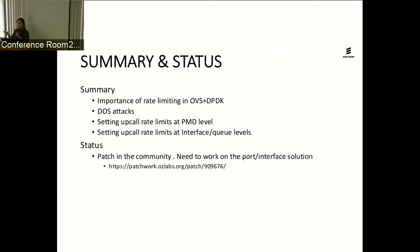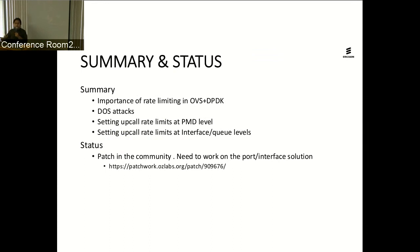In summary, we've covered the importance of rate limiting and how continuous upcall bursts could lead to a DoS-type attack. We've also shown how to configure upcall rate limits not just at the PMD level, but also at the interface and queue levels. As far as status goes, there is already a patch in the community — mostly at the PMD level — and the work to extend it to the port and interface levels is still to come. Thank you.